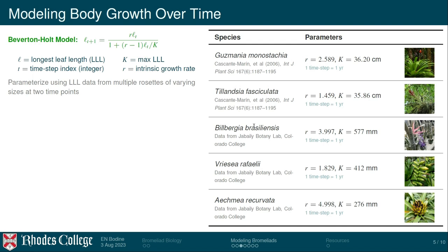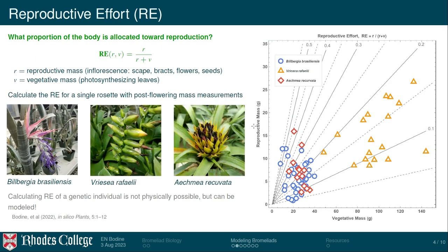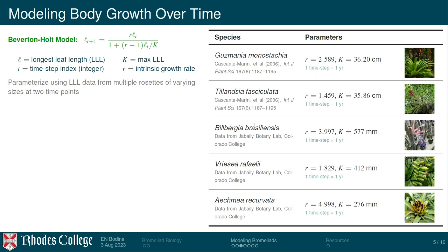By collecting time-series data on how plants grow, we can fit this model and estimate r and K for various species and then make comparisons. The first two species — Guzmania and Tillandsia — come from a paper by Cascante-Marín doing field work in Costa Rica. The lower three are the same greenhouse species from the previous slide. The higher the value of r, the faster the growth; the higher the value of K, the longer the leaves and the bigger the rosette.